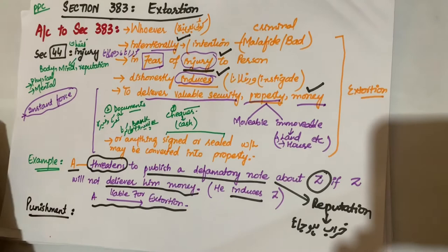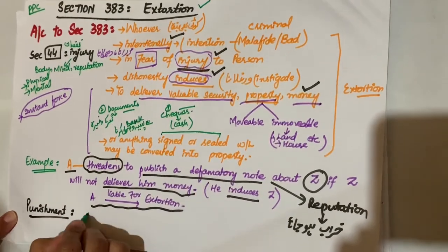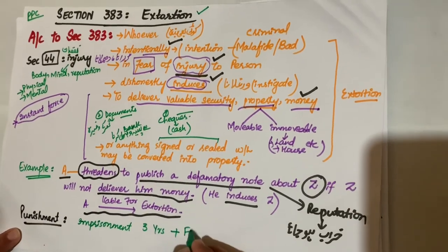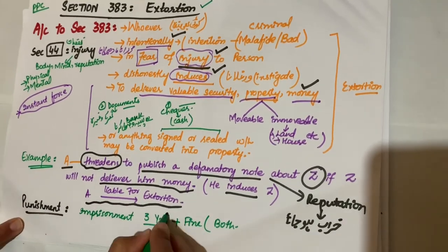Punishment for extortion humare paas kya hai - imprisonment. Whoever commits extortion to uski imprisonment kya hogi, three years ki ya usko fine pay karna hoga ya yeh dono sazaein ek saath.